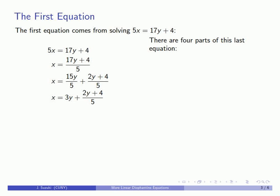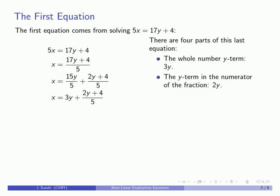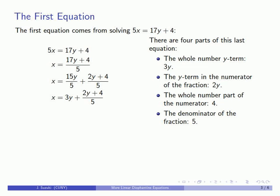Let's take this equation apart. We have four components: first, the whole number y term, 3y; next, a fraction where there's a y term in the numerator, 2y; then a whole number portion of that numerator, 4; and the denominator of that fraction is going to be 5. So what we want to do is figure out where each of these four components comes from.